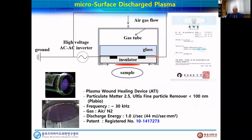Onto the electrode we make a dielectric layer using the screen printing method or other available techniques. For the dielectric thickness we use ceramic materials at around 200 micrometers. Finally, we apply an Al₂O₃ coating at a thickness of around one micrometer, deposited by electron beam method or sputtering method.